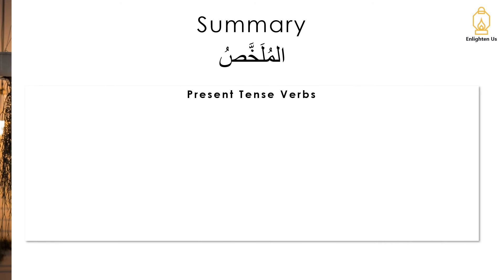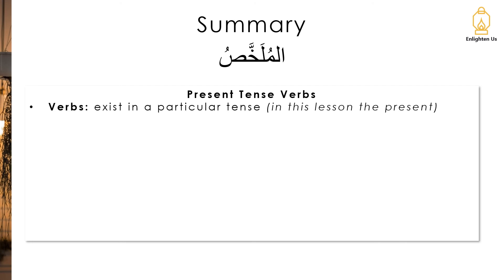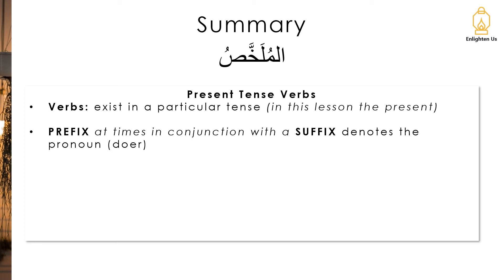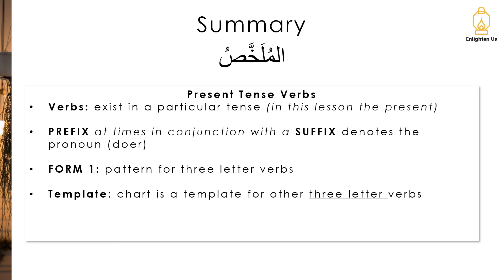So we have come to the end of the lesson. We've been looking at present tense verbs. Let's have a little summary — a ملخص. We said that verbs are different from the اسم or the حرف because they exist in a particular tense; in this case, specifically the present tense. In terms of denoting the pronoun or the doer, the present tense uses a prefix, and sometimes the prefix is accompanied with a suffix. We looked at specifically form one, which are verbs with three letters, and the chart we looked at can be used as a template for other three-letter verbs. And as always, where there is a chart, there is a reminder to memorise — so please do go back and memorise the charts we looked at today.